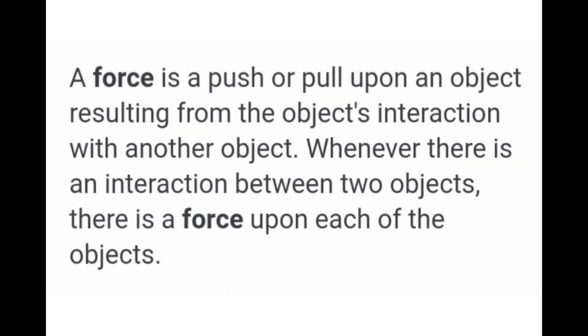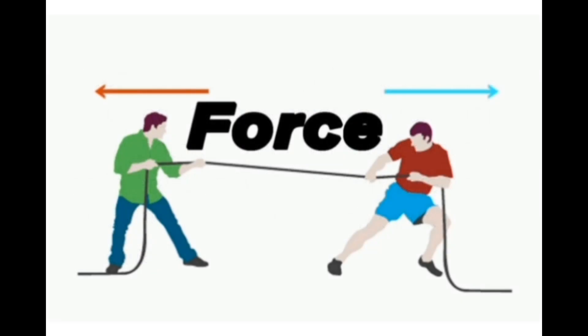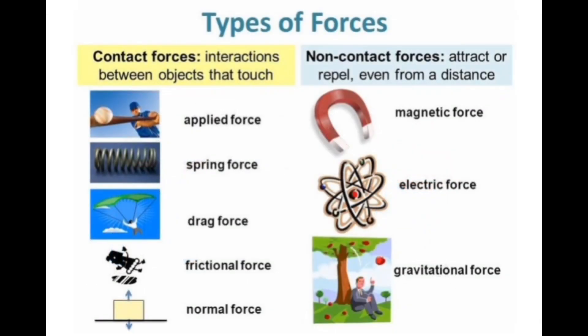One newton is the force which moves a mass of 1 kg with an acceleration of 1 meter per second squared in the direction of force. Force can be classified into two types: contact forces and action-at-a-distance forces. Contact forces are forces in which two interacting objects are physically perceived by contacting each other. Action-at-a-distance force is the force in which two interacting objects are not in physical contact with each other.